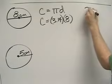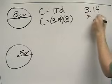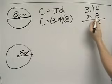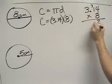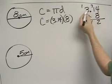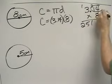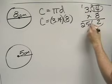So over here on scratch paper, I'm going to multiply 3.14 times 8. 8 times 4 is 32, carry the 3. 8 times 1 is 8, 9, 10, 11, carry the 1. 8 times 3 is 24, plus 1 is 25. I have two decimal places, so I move it over two spaces.